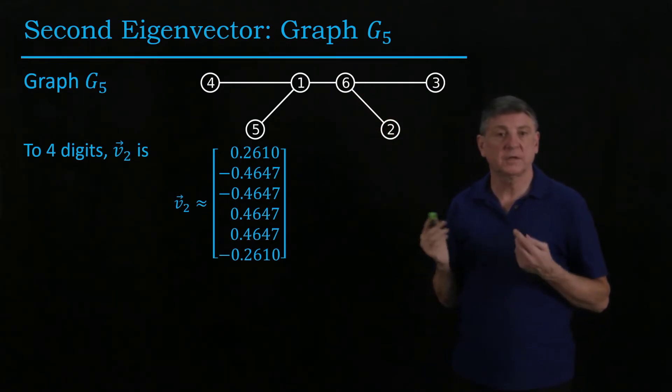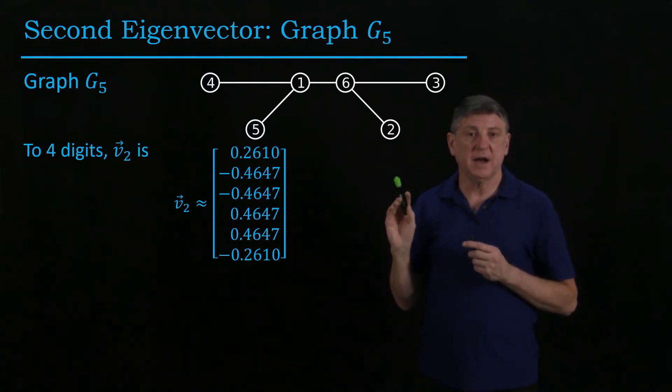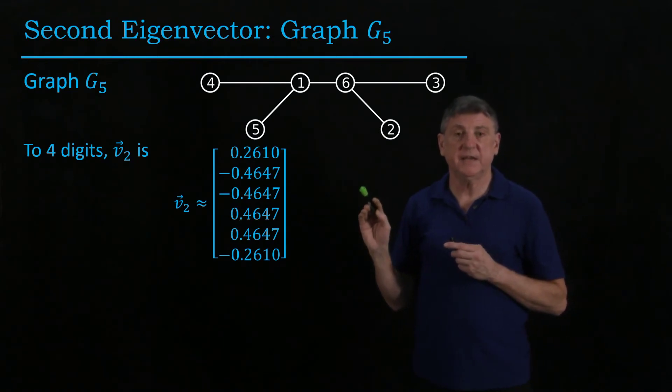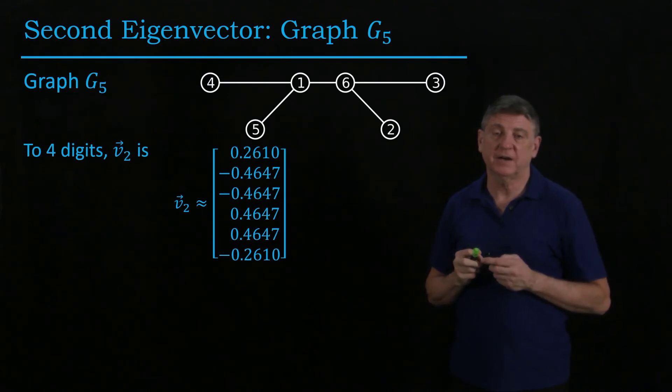So what's happening for our examples is that the second eigenvector, the positivity or negativity of the entries are identifying what we can see as visual clusters in our graph.